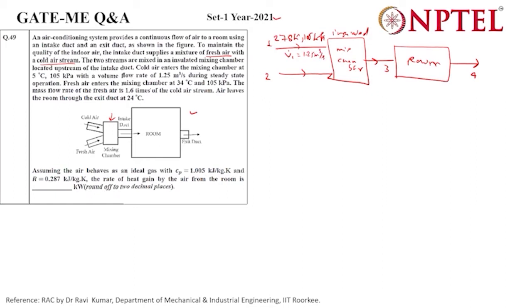The fresh air enters the mixing chamber at 34 degrees Celsius. We can convert this as 307 K. Now the mass flow rate of the fresh air is 1.6 times the cold stream air.